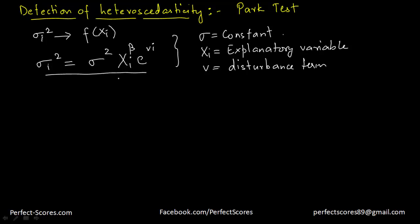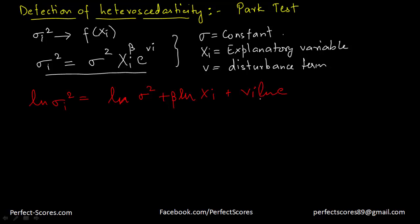This is the model that the Park test states. Another way to state this model is to take a natural logarithm on both sides. You can say that the log of the variance equals log of the constant squared, plus beta times log of Xi, plus v_i times log of e. Since log of e equals 1, that term drops out, and this would be the equation of the Park test.